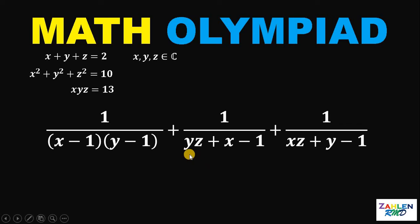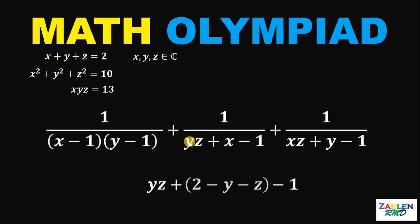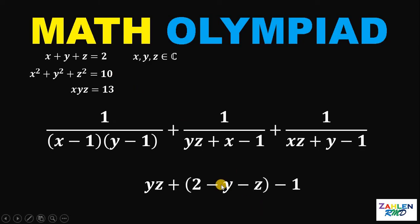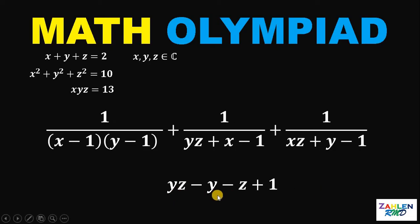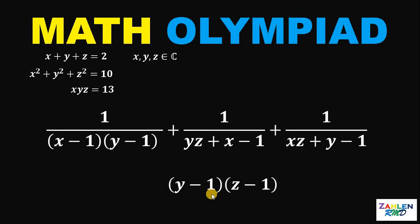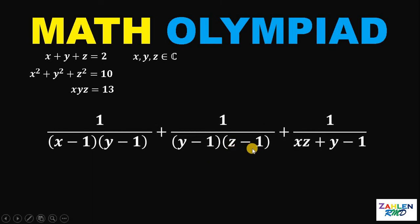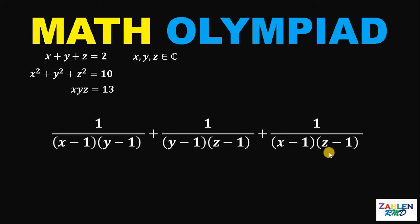We will do the same for the second denominator, yz plus x minus 1. From the first equation, x equals 2 minus y minus z. Substituting and simplifying — 2 minus 1 is 1 — we get yz minus y minus z plus 1. This factors as (y minus 1)(z minus 1). Thus, yz plus x minus 1 equals (y minus 1)(z minus 1). Using the same process, xz plus y minus 1 can be written as (x minus 1)(z minus 1).